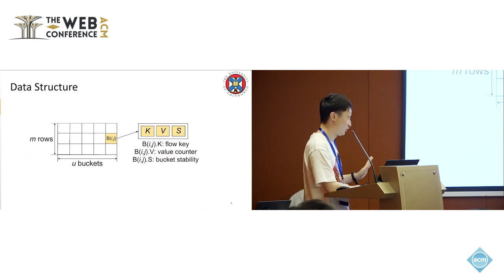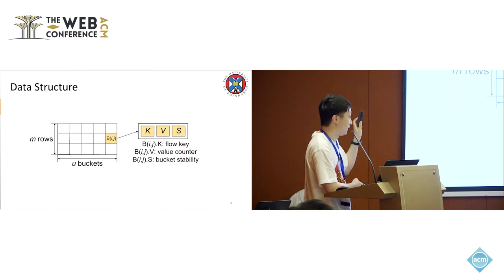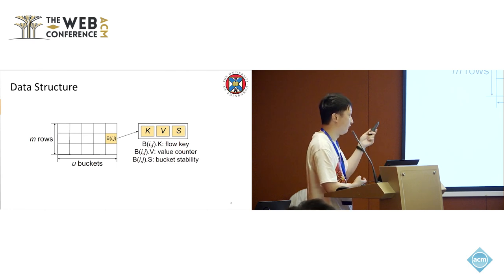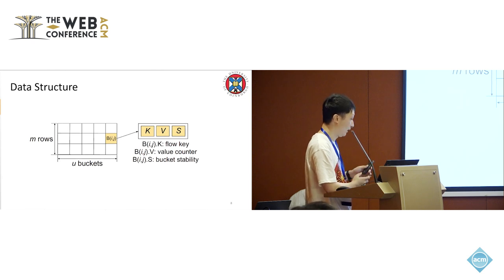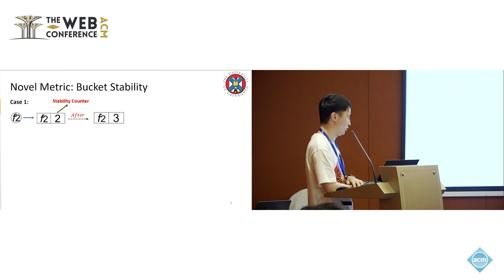The data structure of our method is pretty straightforward and simple. Each bucket is associated with three fields. The key records the item identifier — for a network flow, it can be the source or destination IP address. The value counter records the frequency of the item. And the third field is the new metric we propose, called bucket stability, which I'll illustrate with two cases.